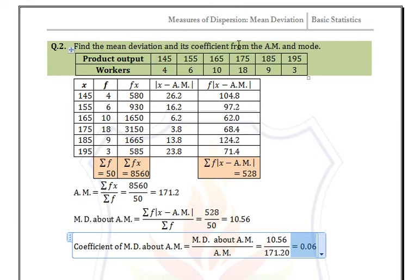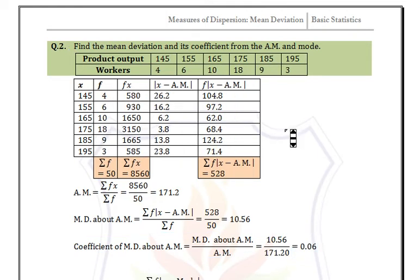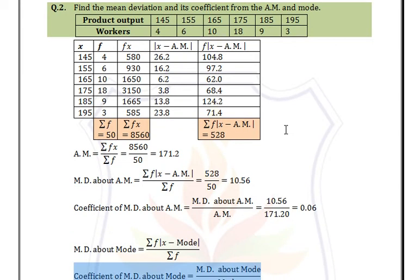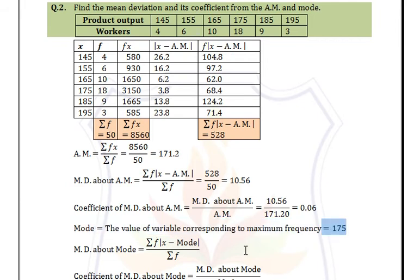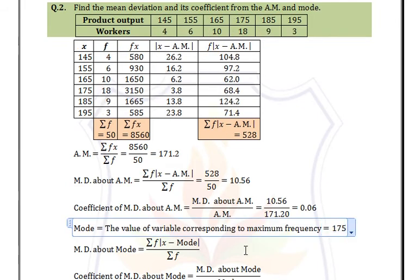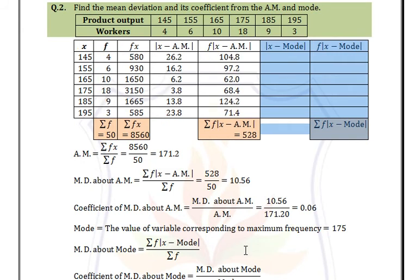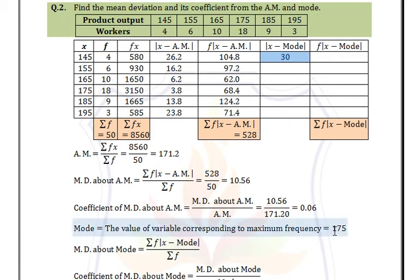Now for mean deviation and its coefficient from mode, we need to find the mode. In frequency distribution we find the highest frequency, which is 18, and the corresponding x value is 175. So mode = 175. Now we calculate |x - mode| and then multiply by frequency. For x = 145: 145 - 175 = 30.